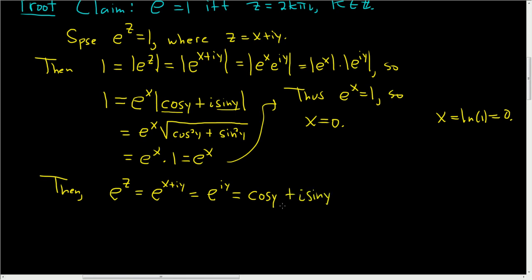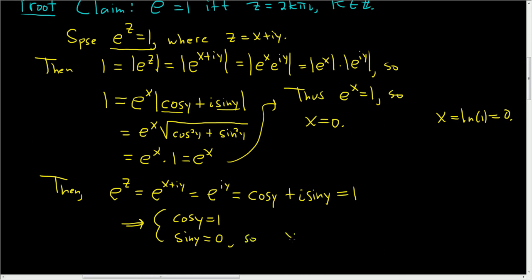So e to the z is equal to cosine y plus i sine y. But by hypothesis, e to the z is equal to 1, so this equals 1. Two complex numbers are equal when the real and imaginary parts are equal. So this means that cosine y equals 1 and sine y equals 0. And this is only going to happen when y is equal to 2k pi, where k is an integer.